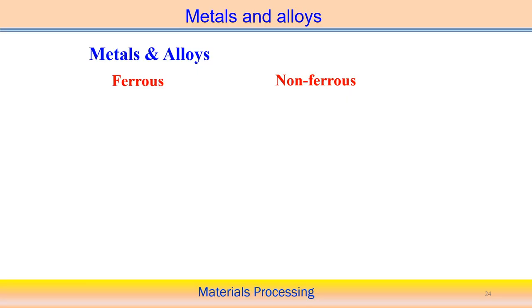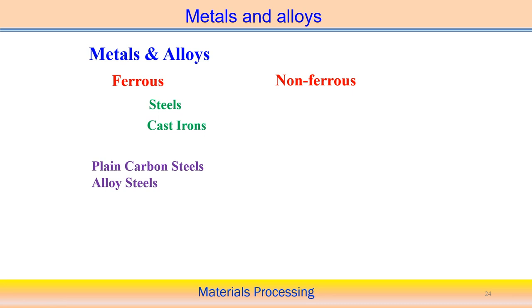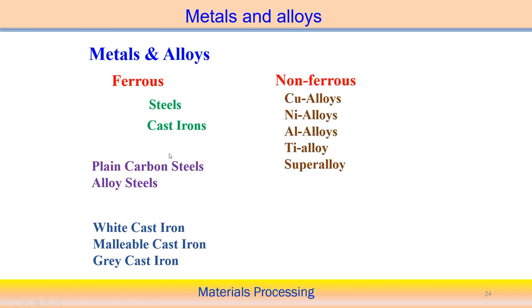Metals and alloys have two basic categories: ferrous and non-ferrous. Ferrous steels are the most widely used materials and can be of two types — plain carbon steel and alloy steel — depending on the composition of different alloying elements. Another category of ferrous metal is cast iron, which has three types: white cast iron, malleable cast iron, and grey cast iron. Non-ferrous metals include copper and copper alloys, nickel alloy, aluminum alloy, titanium alloy, and sometimes super alloys.